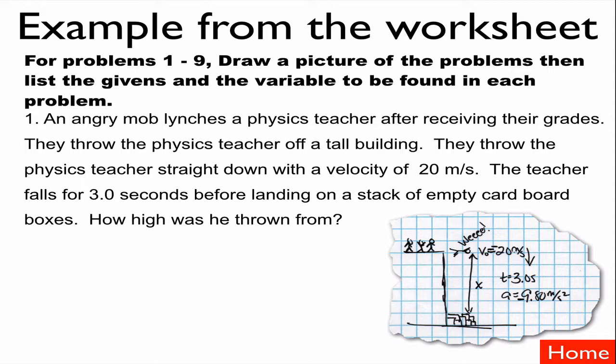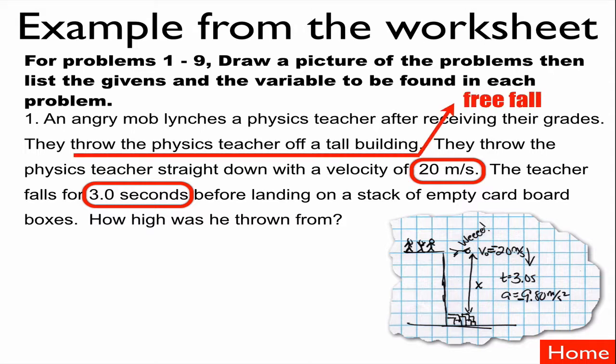I've already got a diagram showing everything, but let's talk about where the numbers come from — they're all given in the text clues of the problem itself. The first one is a unit clue: meters per second. This is the beginning of our story, so that's our 20 meters per second because that's where he's thrown.